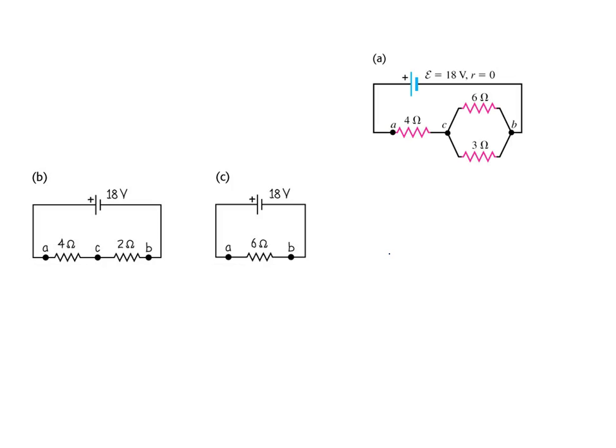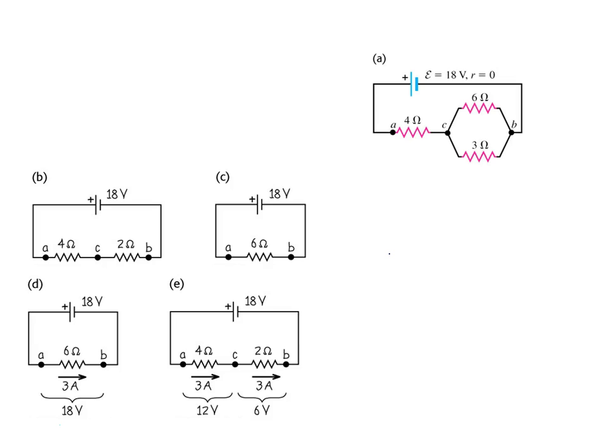Now 4Ω plus 2Ω in series gives 6Ω. The net current is 3A. The net voltage is 18V, exactly equal to the external supply. We distribute the 18V across 4Ω and 2Ω using V = IR, giving 12V and 6V.